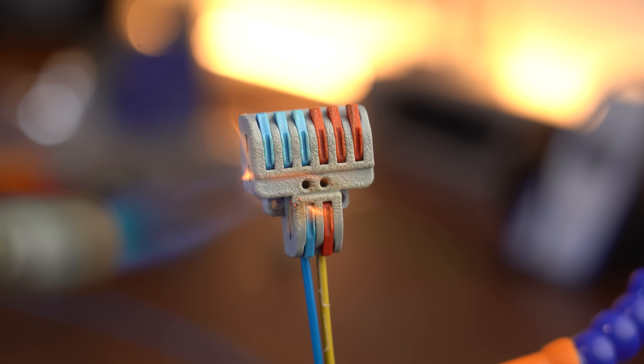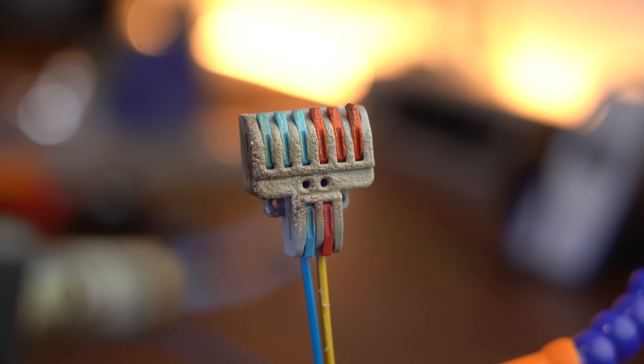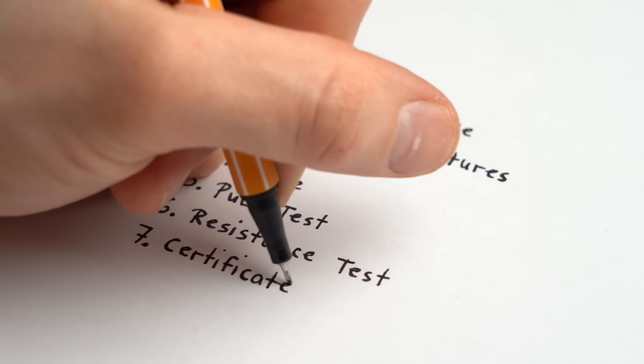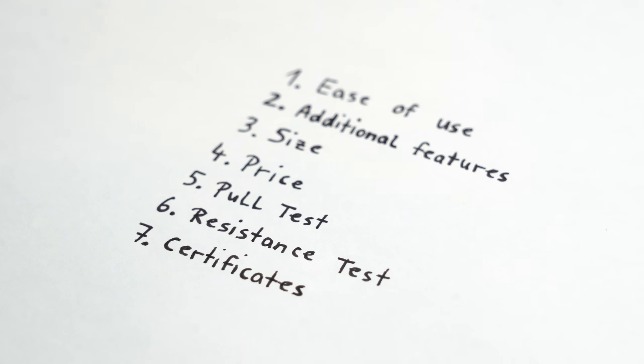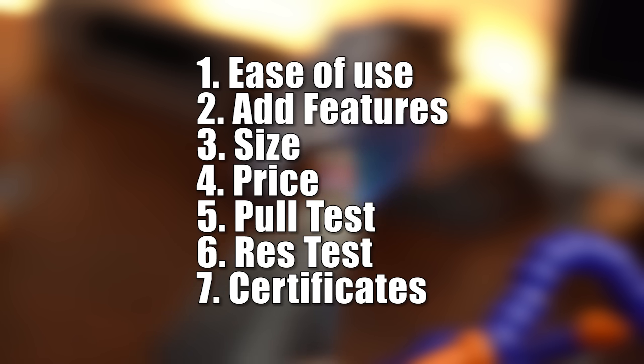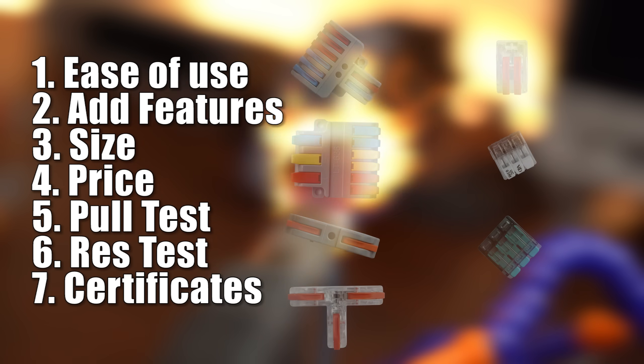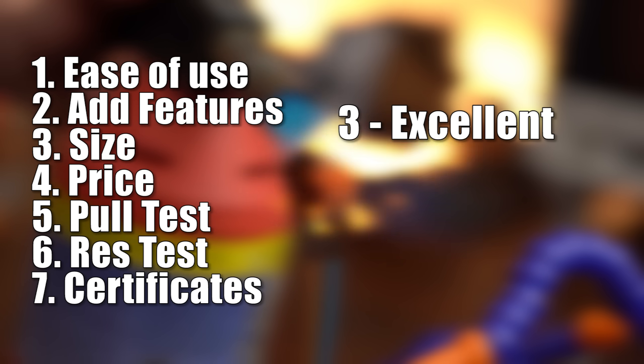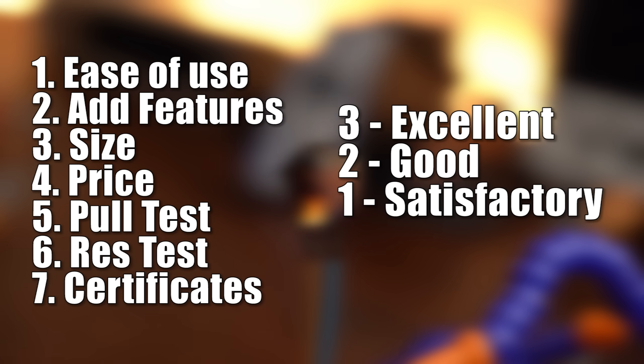But while removing three points from the list, I also want to add two new ones called Additional Features and Certificates which I will talk about in detail later. So here is my final list, and each one of the seven connectors in this race can win up to three points in one category, with three points meaning excellent, two points good, one point satisfactory, and zero points meaning bad.